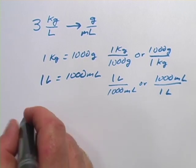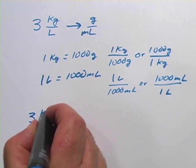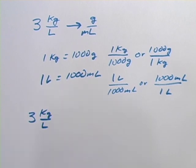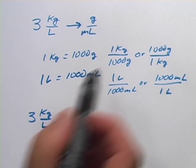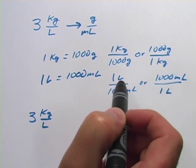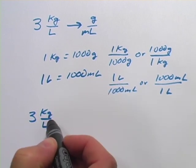Now let's start with the original value here. We've got three kilograms per liter. What I want to do first is convert these kilograms to grams. So I want to take one of these to multiply by. And what I want to do, if the kilograms are on top,